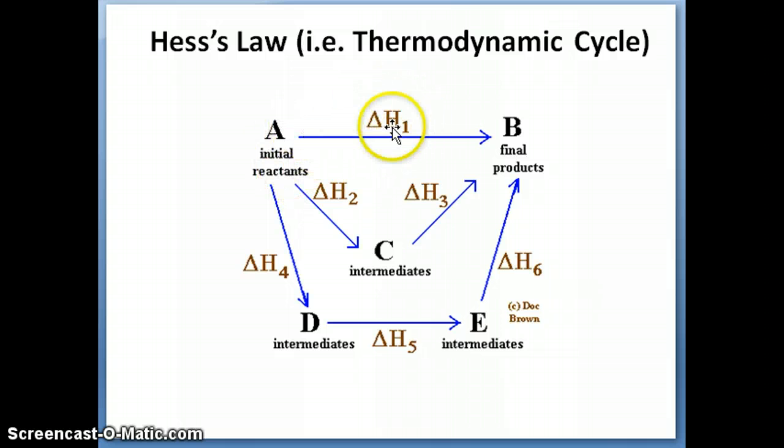The idea of Hess's law is the following. Instead of trying to figure out how to measure this delta H1 directly, what we can do is we can just add the values of delta H2 and delta H3 together, and those two numbers added together should be equal to delta H1. The reason is because it's a state function. Because it's a state function, I don't really care what these numbers are, but as long as what I do is take this thing A to B in the end, the numbers I get should correspond to exactly the amount of energy it would take to go from A to B directly.